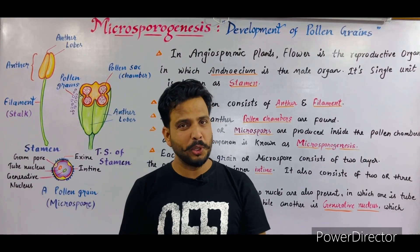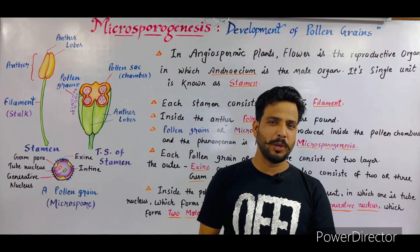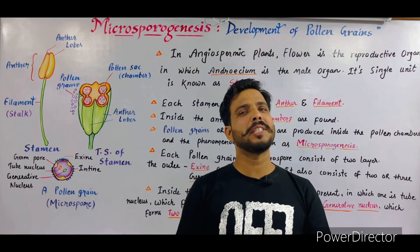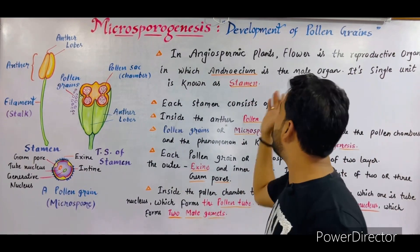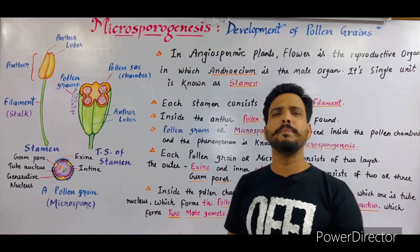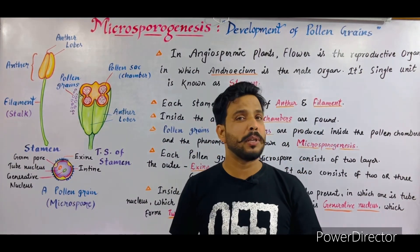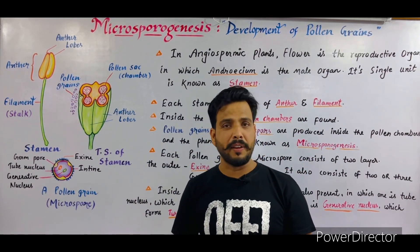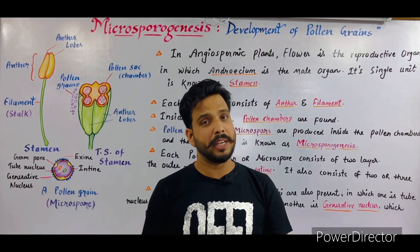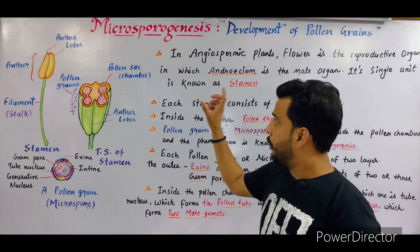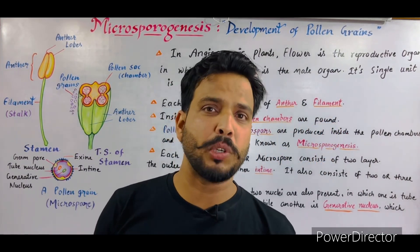Good evening everyone, my name is Vijay Gupta and you are watching biology classes. In this lecture, I am going to start a new topic: microsporogenesis, meaning the development of pollen grains. This chapter is especially important for Class 12 students — it belongs to Chapter 2, Sexual Reproduction in Flowering Plants — and also for NEET and BST students.